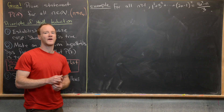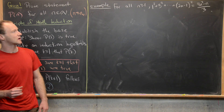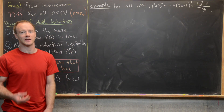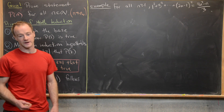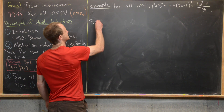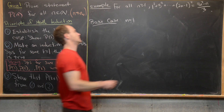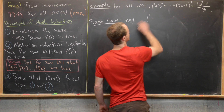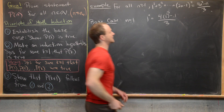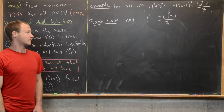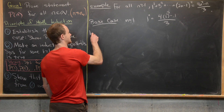For our next example, we prove a closed form for the sum of odd squares: 1² + 3² + 5² + … + (2N−1)² = (4N³ − N)/3. The base case is N = 1: 1² = 1, and (4·1³ − 1)/3 = 3/3 = 1. So the base case is confirmed.